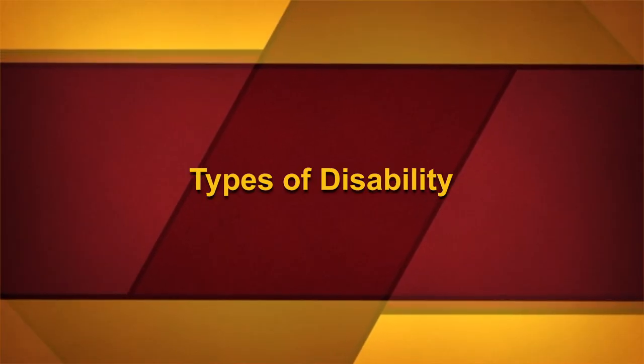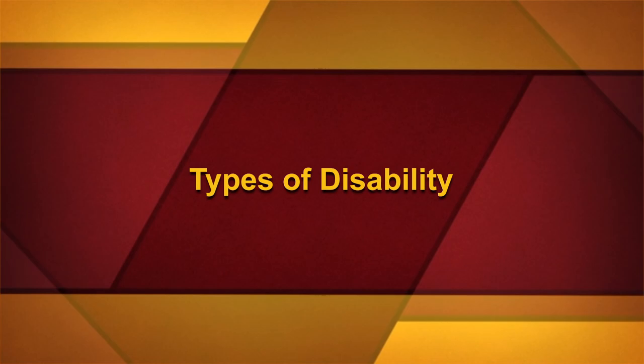As per the Rights of Persons with Disabilities Act 2016, types of disabilities have been increased from 7 to 21, and the Central Government will have the power to add more types of disabilities.